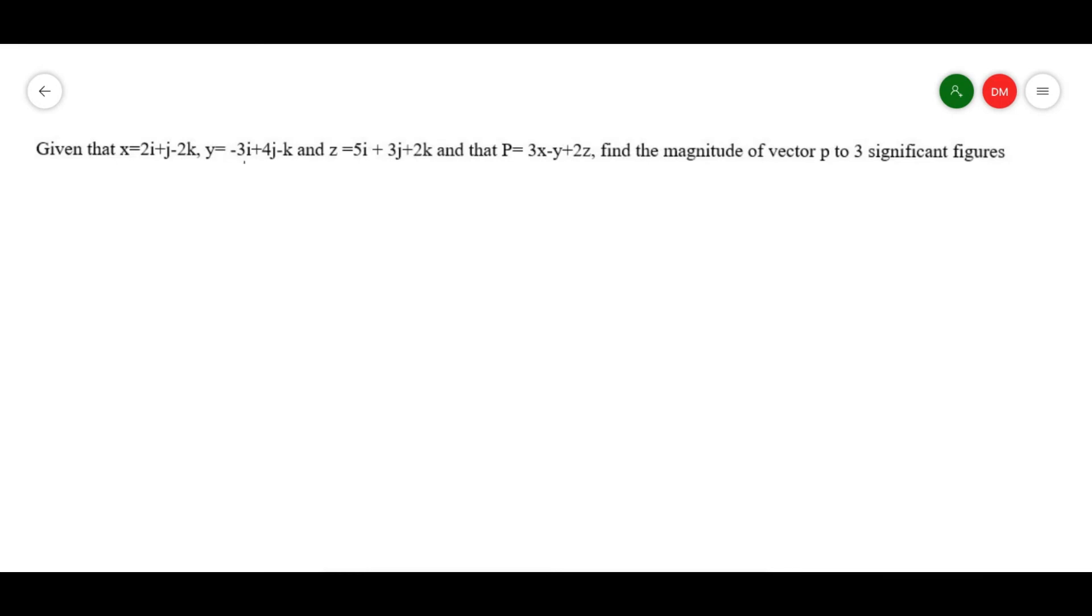Given that x is equals 2i plus j minus 2k, y is equals to negative 3i plus 4j minus k, and z is equals to 5i plus 3j plus 2k, and that p is equals to 3x minus y plus 2z, find the magnitude of vector p to three significant figures.